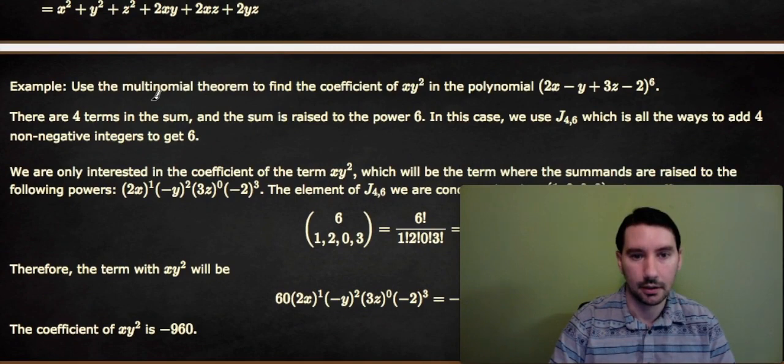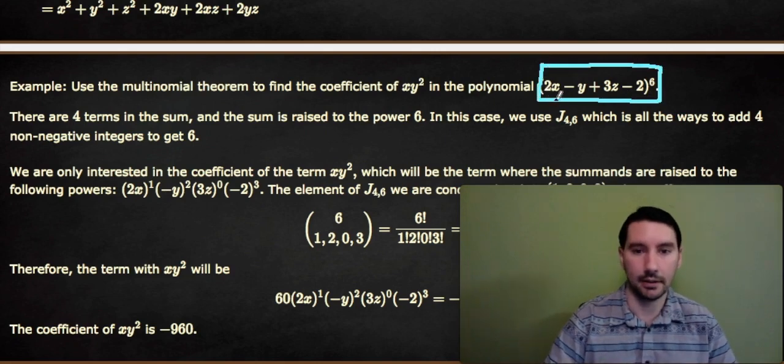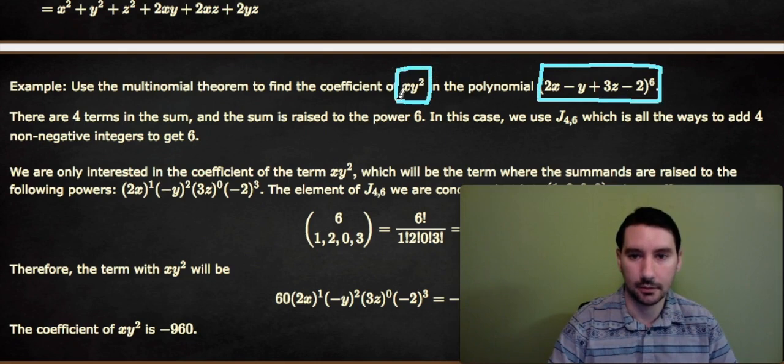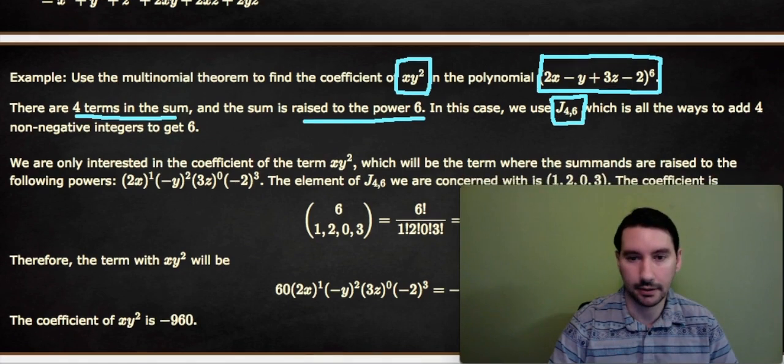So let's take (2x - y + 3z - 2) to the 6th power. And we're not going to try to expand the entire thing, but we just want to find the coefficient of xy². So if you multiply this out, there's going to be an x and a y² and a bunch of stuff somewhere without a z. So there's an xy² term. And what is the coefficient? Well, there are 4 terms in the sum, and the sum is raised to the power 6. So we would have to use J₄₆. So we need the numbers to add up to 6, and there has to be 4 numbers.